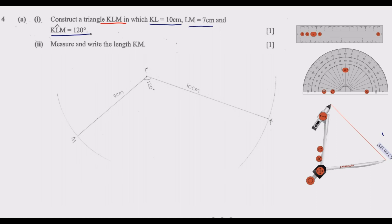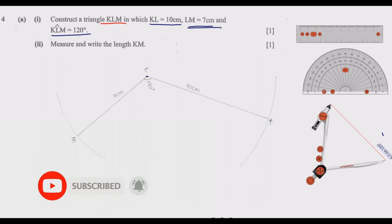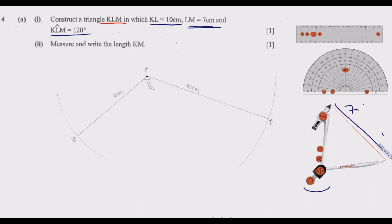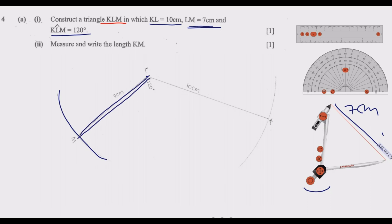The 120-degree angle is subtended at L, so we need to start with point L. Place a dot at L. Then start with LM — from L to M we have 7 cm. Extend the compass to 7 cm, place the pin at L, and make an arc at M. Then join that point to get point M.